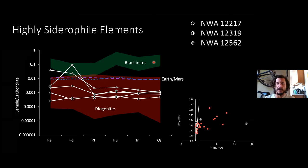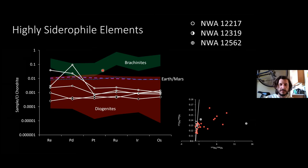If we look at the highly siderophile element abundances, these are a lot more telling. The range of diogenites is shown in red, brachinites in green, and the ultramafic achondrites as white lines. Their patterns are broadly chondritic. Earth is in blue and Mars in purple — the mantles of these planets. Their highly siderophile element abundances plot in the general range of the diogenites. This essentially rules out association with the brachinites — as primitive achondrites, brachinites retain a higher HSE concentration because their parent body never experienced a core-mantle segregation event.